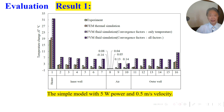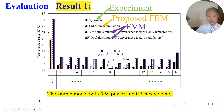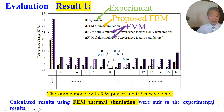Evaluation results. Each element and temperature change: green is experiment, orange is proposed FEM, purple is FVM — finite volume method. The simulated model used 5 watt power and 0.5 meter per second velocity. The calculated results using FEM thermal simulation were close to the experimental results.